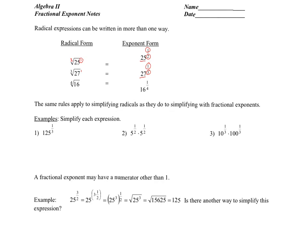Now, let's say we're given some expressions in exponential form and we're asked to simplify them. We can always transfer those back into radical form. So number one, 125 to the 1/3 power — I can rewrite that as the third root of 125, which of course is 5. If we encounter something like 5 to the 1/2 times 5 to the 1/2, we could change that back into radical form. That's the square root of 5 times the square root of 5, which we know to be 5. Notice that these have the same base of 5, so we can keep the base and add the exponents — that just becomes 5 to the first, or 5.